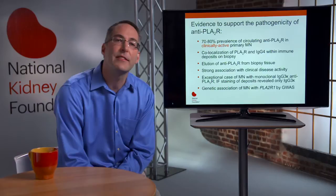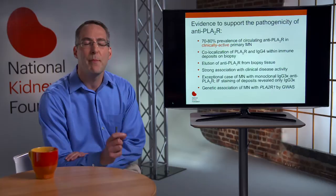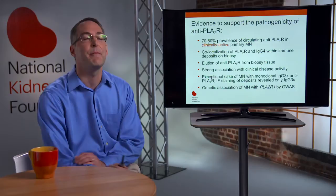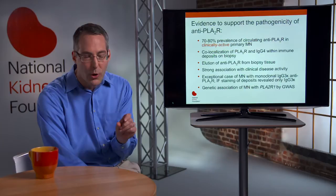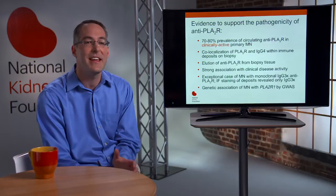There's an exceptional case discovered by Pierre Ronco's group in France in which a monoclonal IgG3 kappa anti-PLA2R antibody was able to cause disease in both the native kidney and later in the patient's transplant. The deposits in these organs were a monoclonal IgG3 kappa, suggesting that the anti-PLA2R really was the pathogenic antibody. There's also genetic evidence: an unbiased genome-wide association study identified the PLA2R1 locus as well as the HLA region as the two most significant genetic loci associated with primary membranous nephropathy.